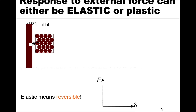Those two demos illustrate a key difference in the two main types of material response to mechanical force: elastic and plastic. We're going to start with elastic because that was the first demo. We have a test sample — you can think of this as a metal, ceramic, or polymer. We have atoms in a close-packed arrangement, just one small part of this material, and we're going to see what happens when we apply a tensile stress.